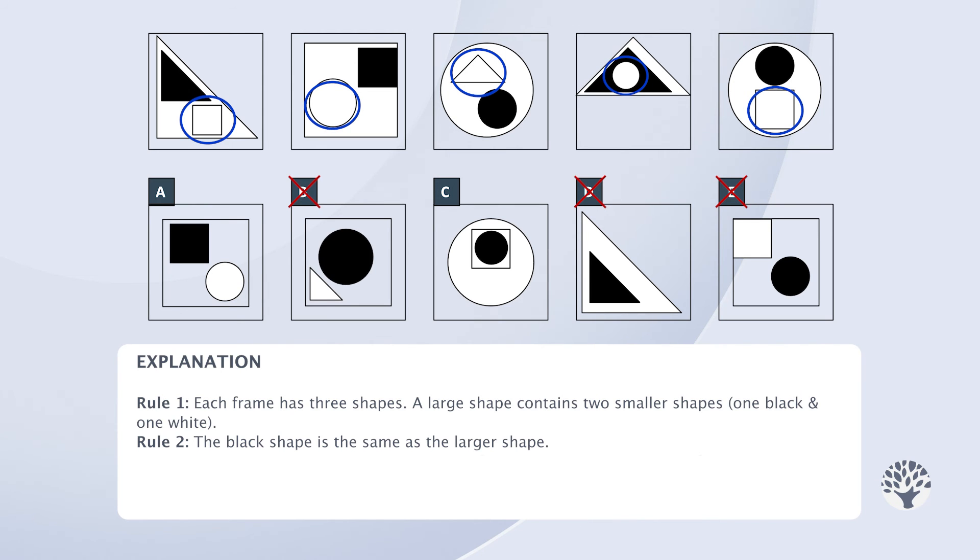In frame one, we notice that the small white shape is a square. In frame two, we see that the large white shape is also a square. That pattern continues across the frames.